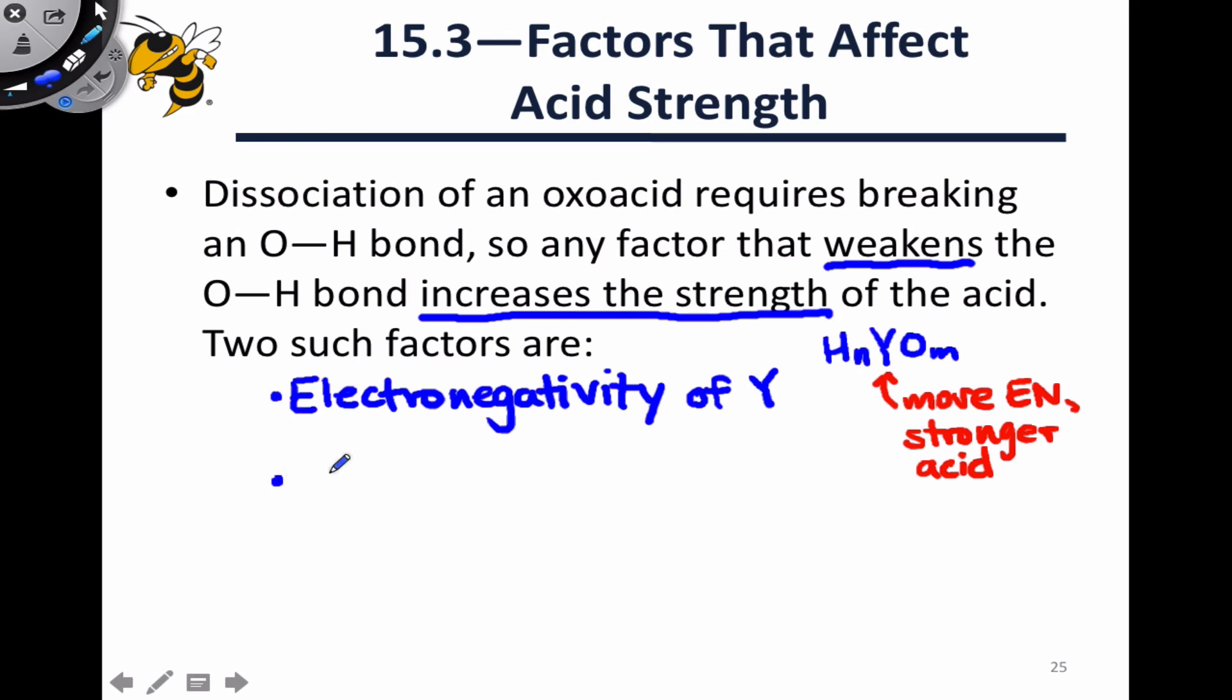Other electronegative atoms within the oxoacid structure also influence the acidity of oxoacids, and in particular, the oxygen atoms bonded to Y, and the number of such oxygen atoms are going to influence the acidity. To understand this trend, we need only recognize that these oxygen atoms are themselves electronegative and will pull electron density towards themselves. This robs the hydrogen atoms of electron density and makes them more partially positive. For a similar idea to the electronegativity of Y, more oxygens leads to a stronger acid. More oxygens means more partial negative charge on those oxygens and more partial positive charge on the hydrogens, making them more susceptible to removal by a base.